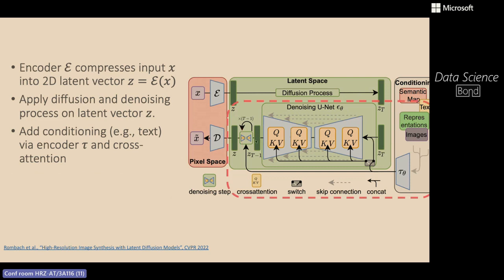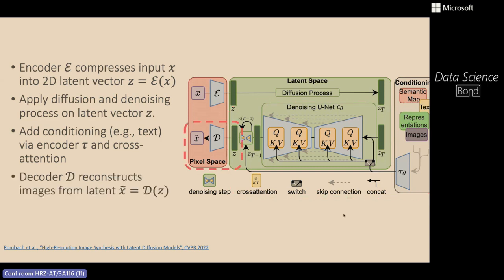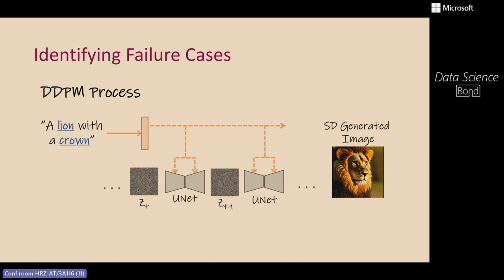The main thing to remember is the gradual denoising: at each time step we take ZT and output a slightly less noisy latent ZT−1. Here's an example of a generation by Stable Diffusion for the prompt 'a lion with a crown.' The image features the lion but not the crown. Somewhere in the process, the model either neglected to attend to 'crown' or it simply wasn't expressive enough to generate the lion with the crown. We'll zoom into the text injection process to understand why the crown was not generated.